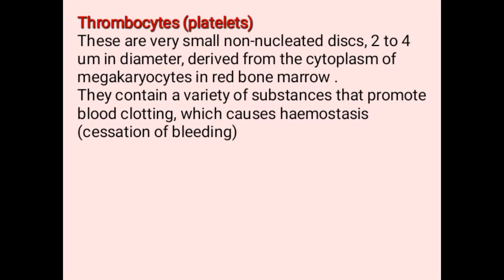Thrombocytes, in layman's language, are called platelets. They are said to be very small cells without a nucleus, just like red blood cells. Thrombocytes do not have a nucleus and they are about two to four micrometers in diameter, meaning they are very small compared to other blood cells. They are actually derived from the cytoplasm of megakaryocytes, which are found in the red bone marrow.